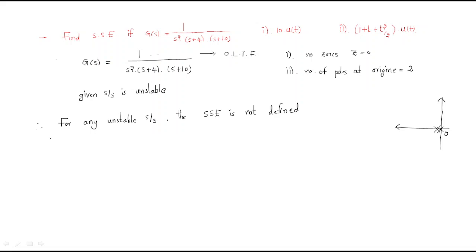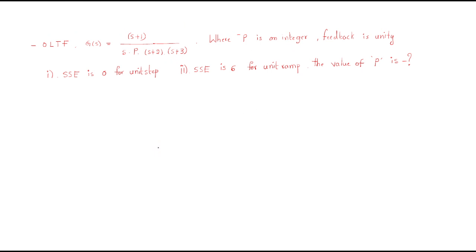For any unstable system, the SSE is not defined. So in any examination, if this question appears and one option is 'not defined,' first check whether the given G(s) open-loop transfer function is stable or not before finding the steady-state error. This is a very important thing.